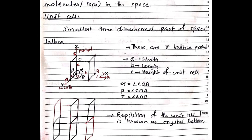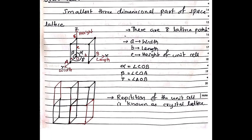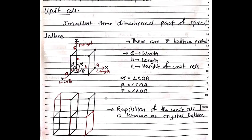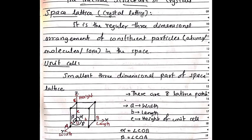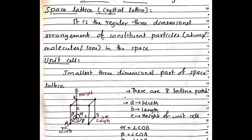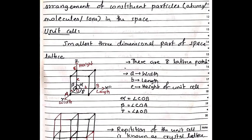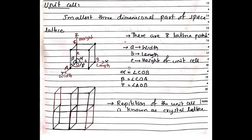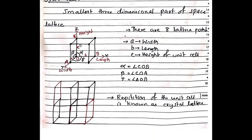This is a simple cubic unit cell. Any repetition of the unit cell is known as the crystal lattice. So the unit cell is known as the crystal lattice, also called the space lattice — a regular three-dimensional arrangement of constituent particles. It is the simplest repeating unit.